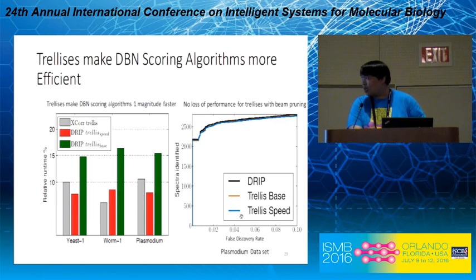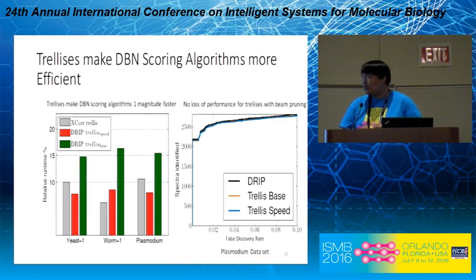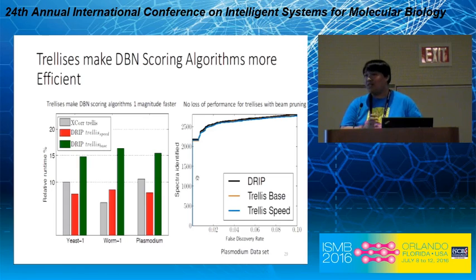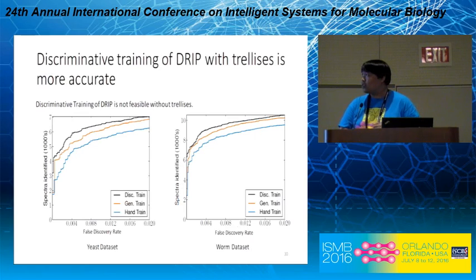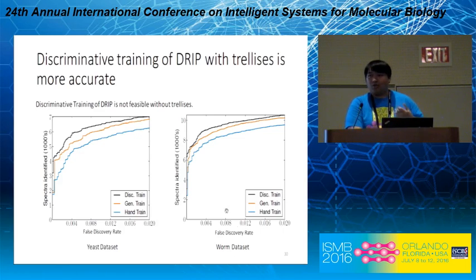To be more specific about this plot, the false discovery rate plot utilizes a target-decoy competition approach to evaluate the effectiveness of various scoring algorithms, where at every false discovery rate threshold we report the number of observed spectra identified as target peptides as opposed to decoy peptides. Generally speaking, the higher the curve, the better the performance. As can be seen from these two plots, discriminative training boosted the performance of the DRIP model quite significantly, all thanks to the efficiency brought by trellises.